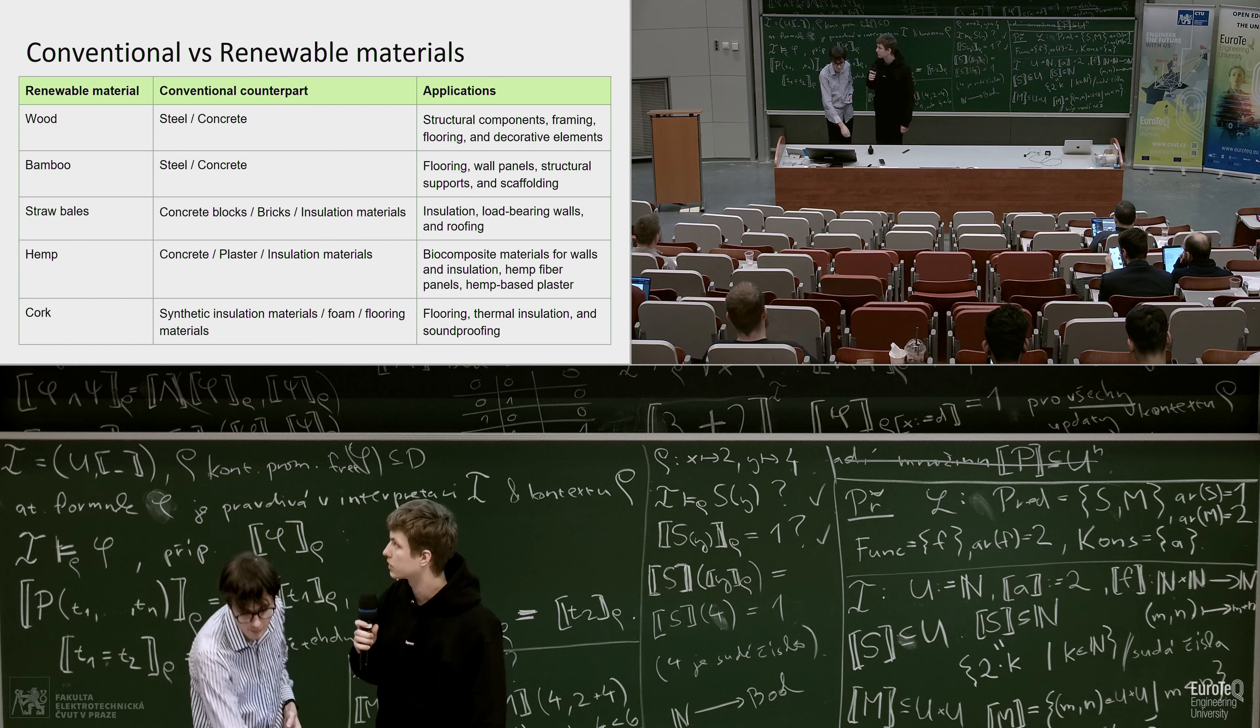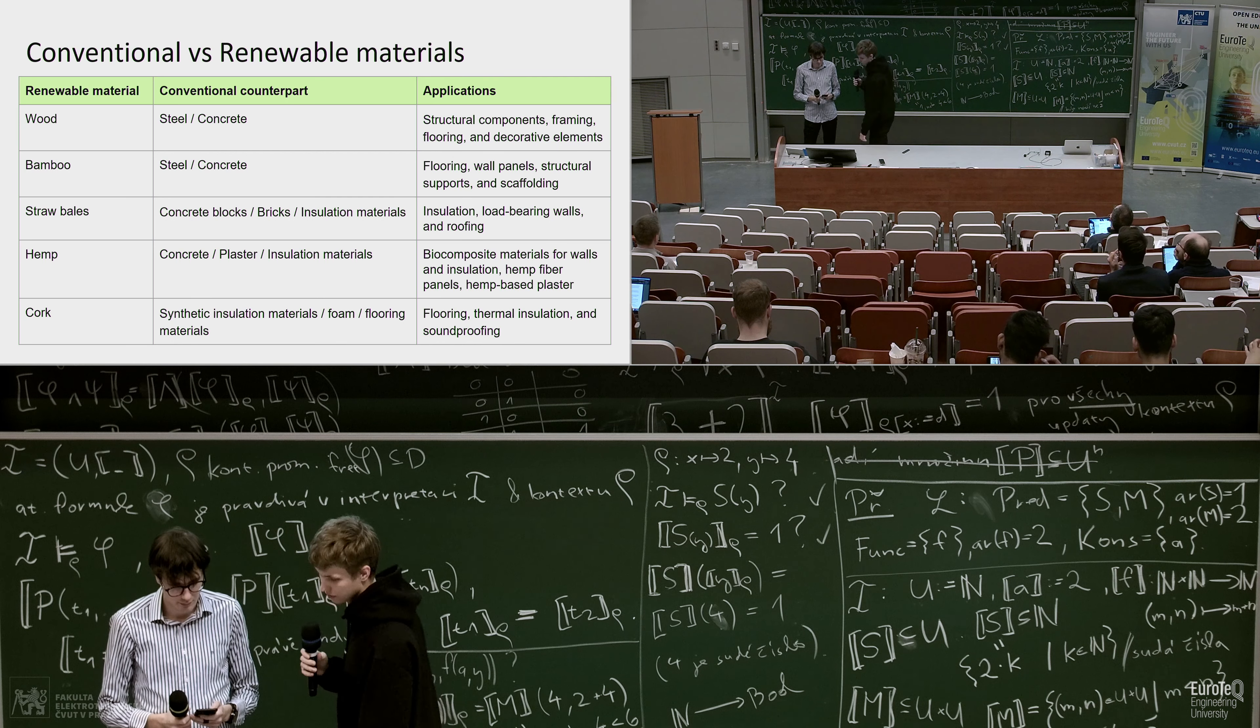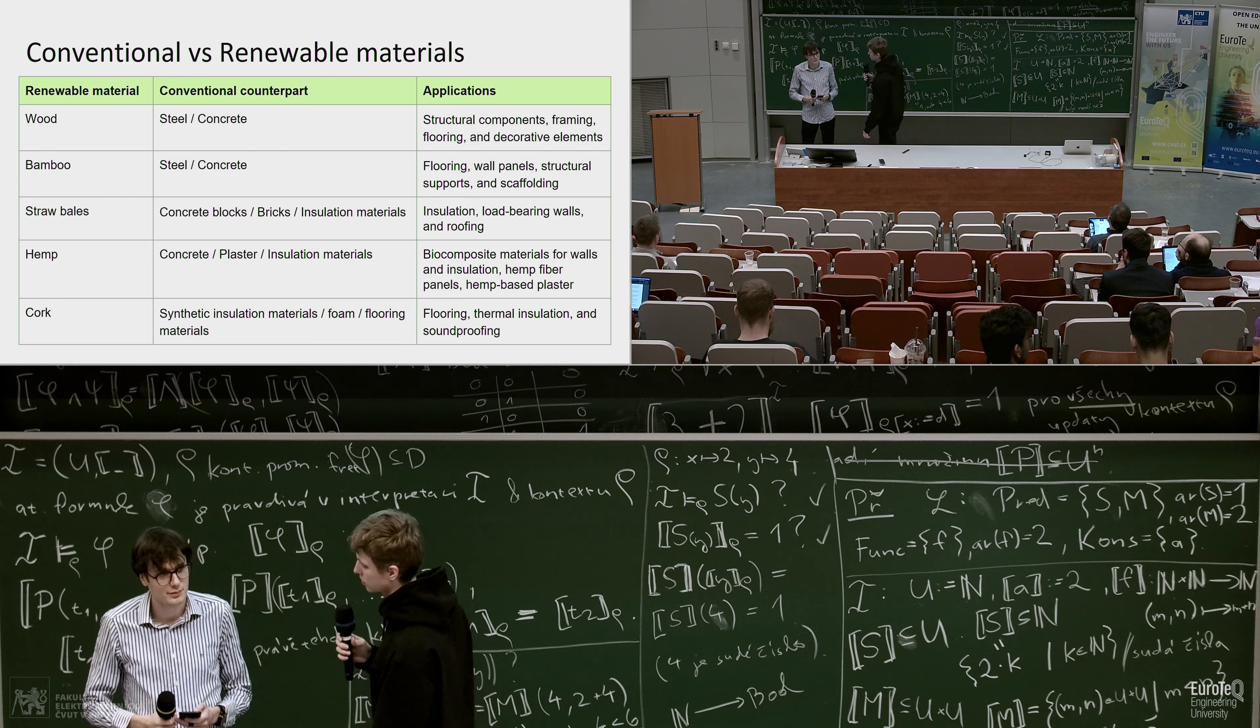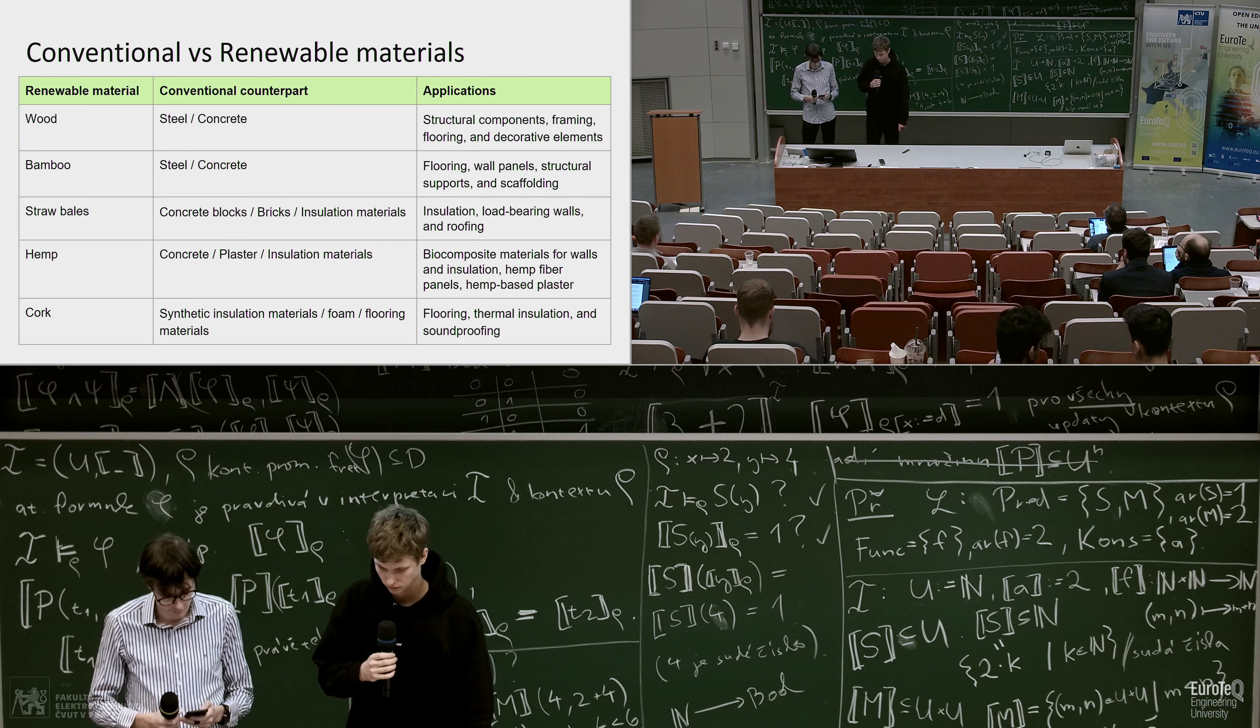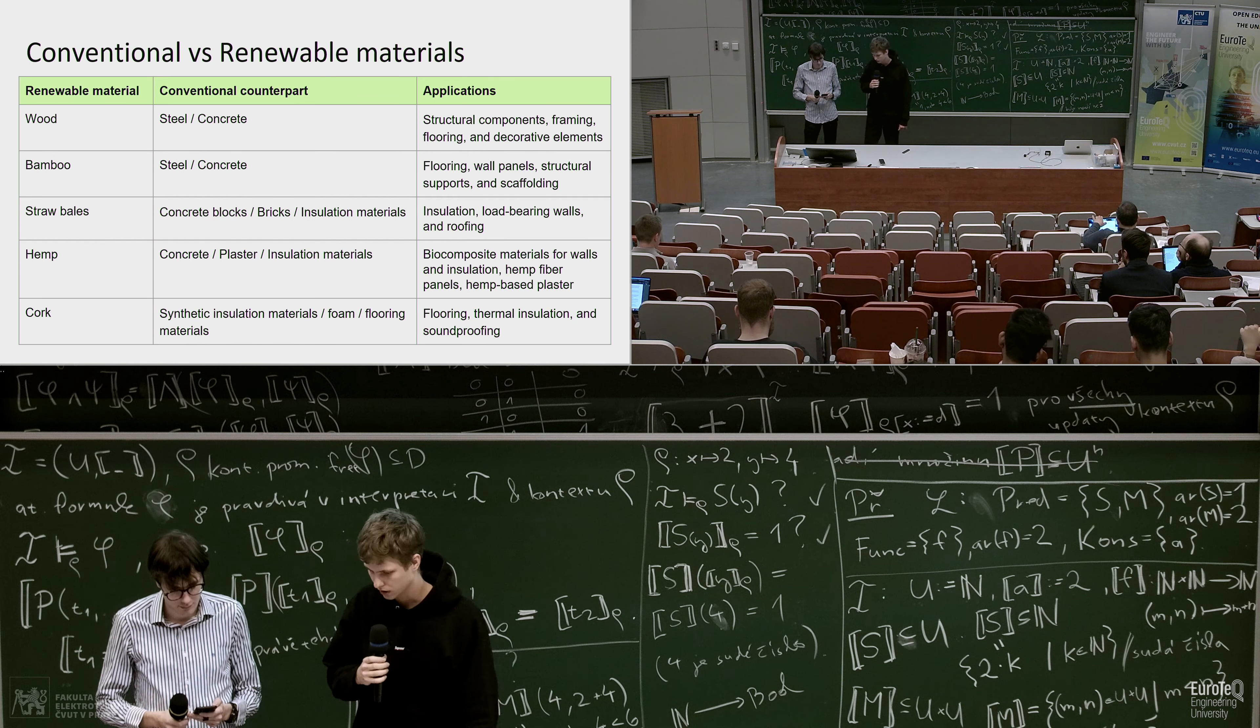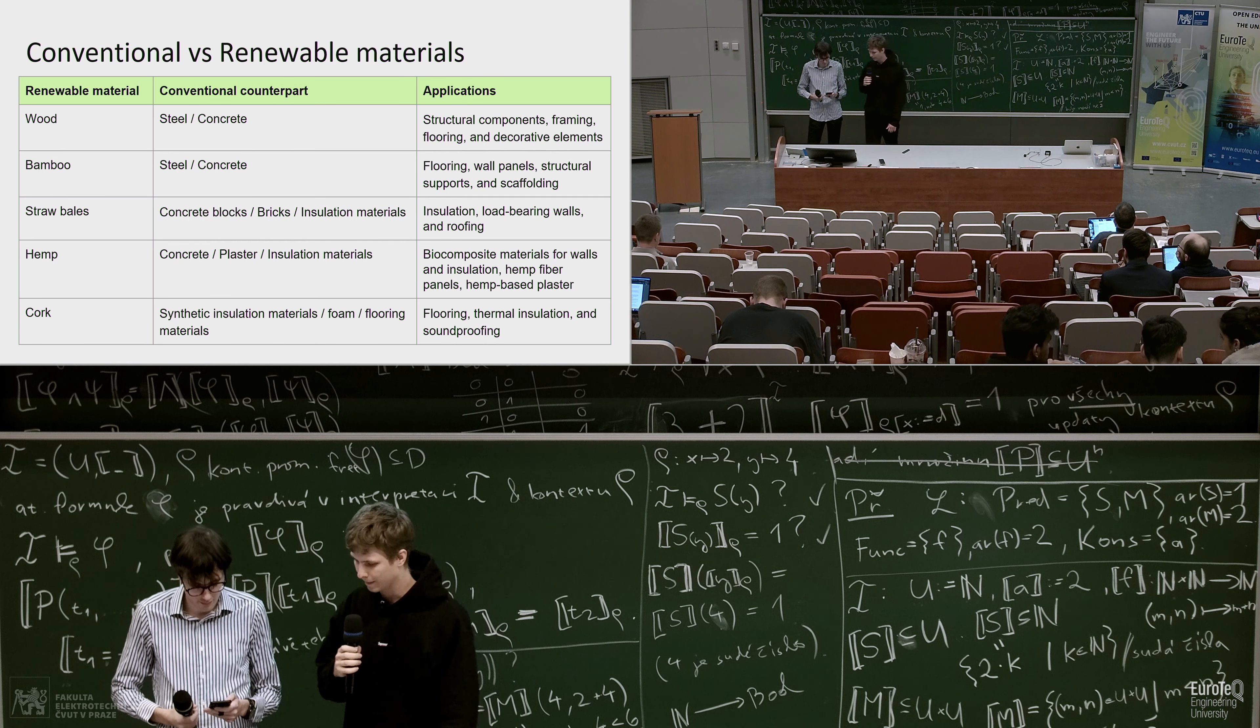The following table presents the comparison between conventional and renewable resource materials and their possible applications. For wood and bamboo, the counterpart for steel or concrete, they can be used for structural components. And then we have straw bales, hemp and cork which can be used as insulation materials and they can replace them. Moreover, hemp can be used as a replacement for plaster.